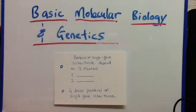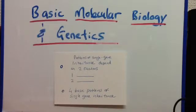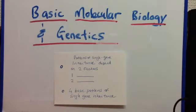We're going to talk about patterns of single gene inheritance. They depend on two factors, basically. The first factor is whether the gene is on an autosome or a sex chromosome — remember that the autosomes are the 22 chromosomes that are not sex chromosomes. The second factor is whether the phenotype is dominant or recessive. Dominant means that you only need one allele to have the characteristic expressed, and recessive means that you would need both.